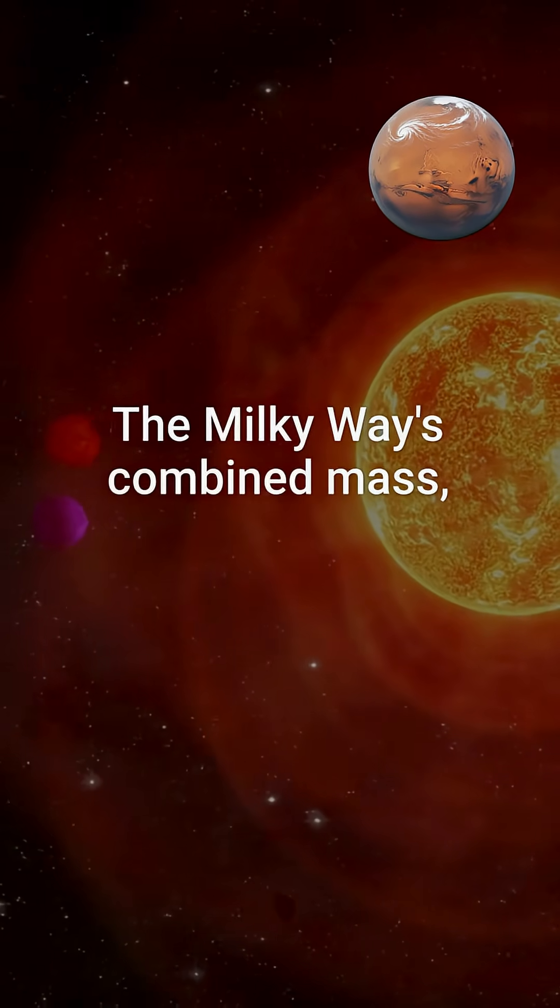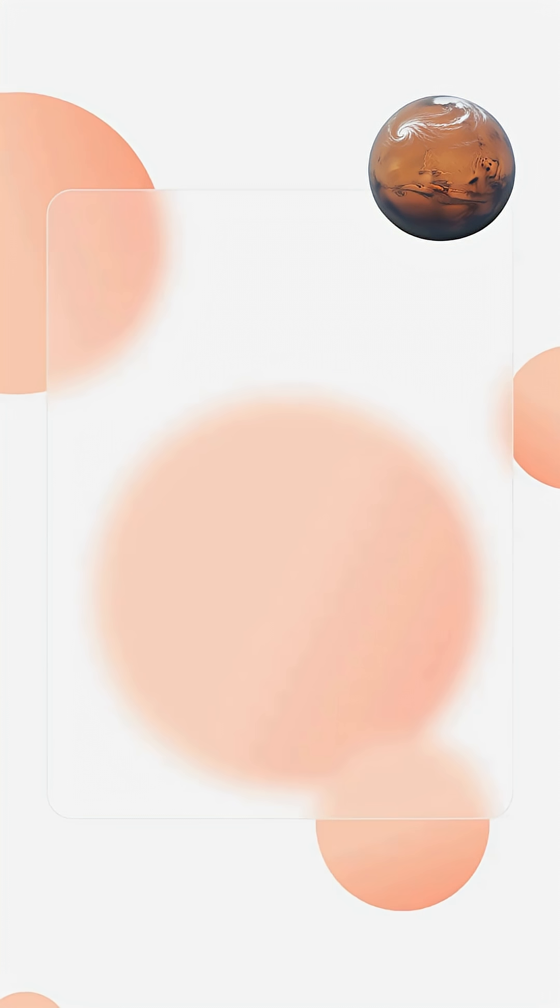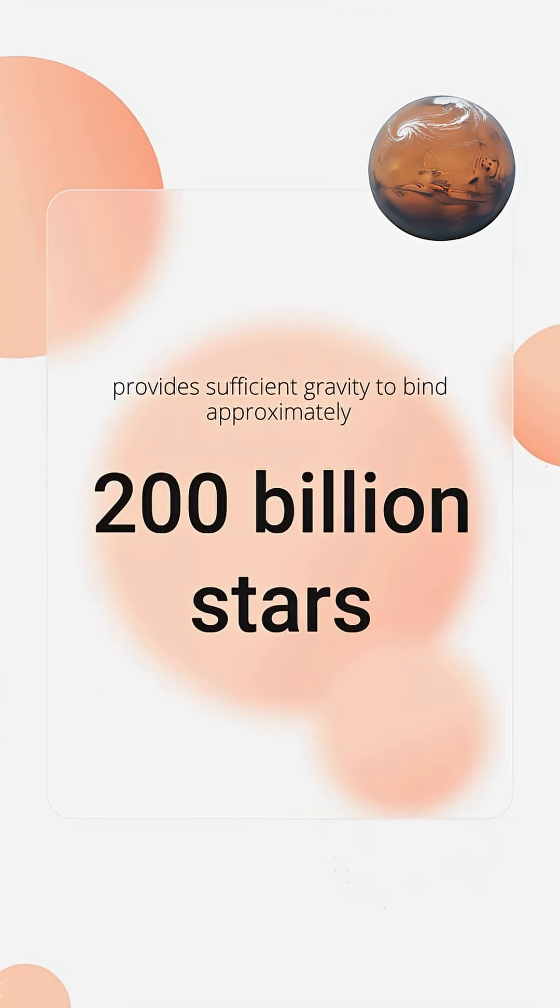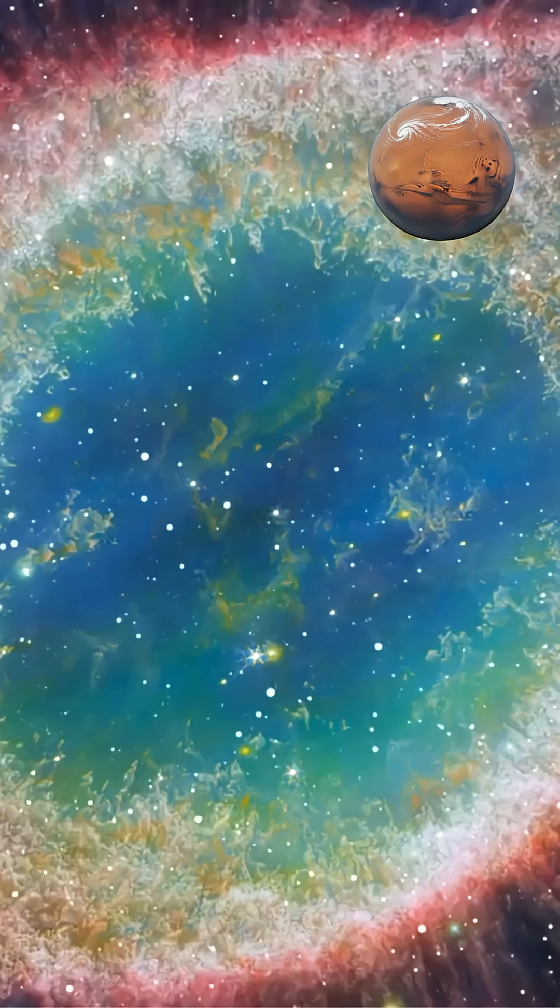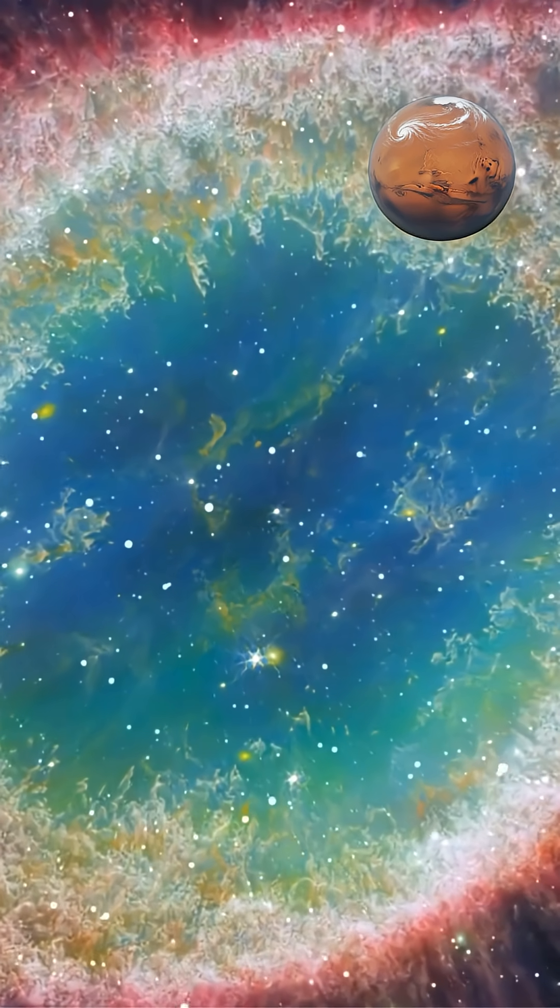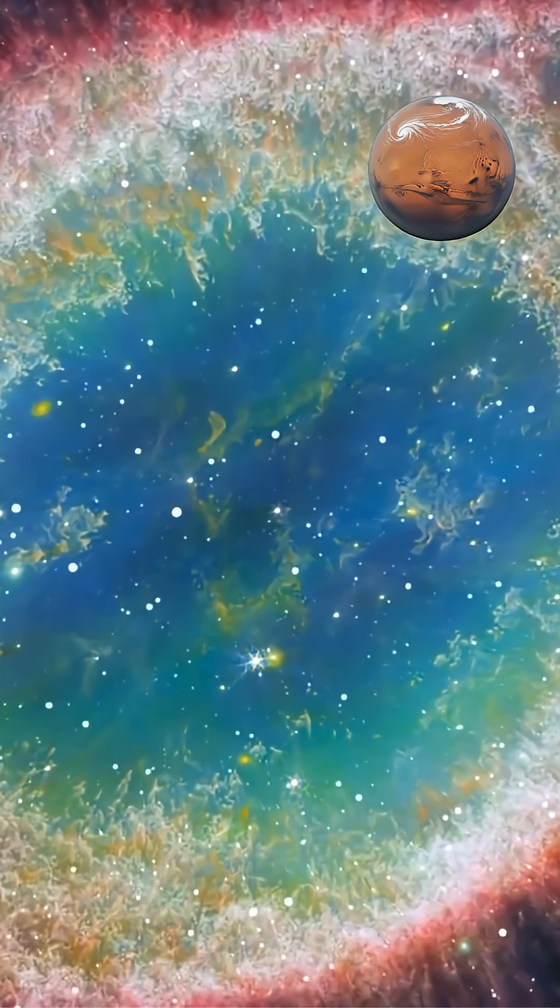The Milky Way's combined mass, including dark matter, provides sufficient gravity to bind approximately 200 billion stars in stable orbits around the galactic center, preventing them from flying apart into intergalactic space despite their high velocities.